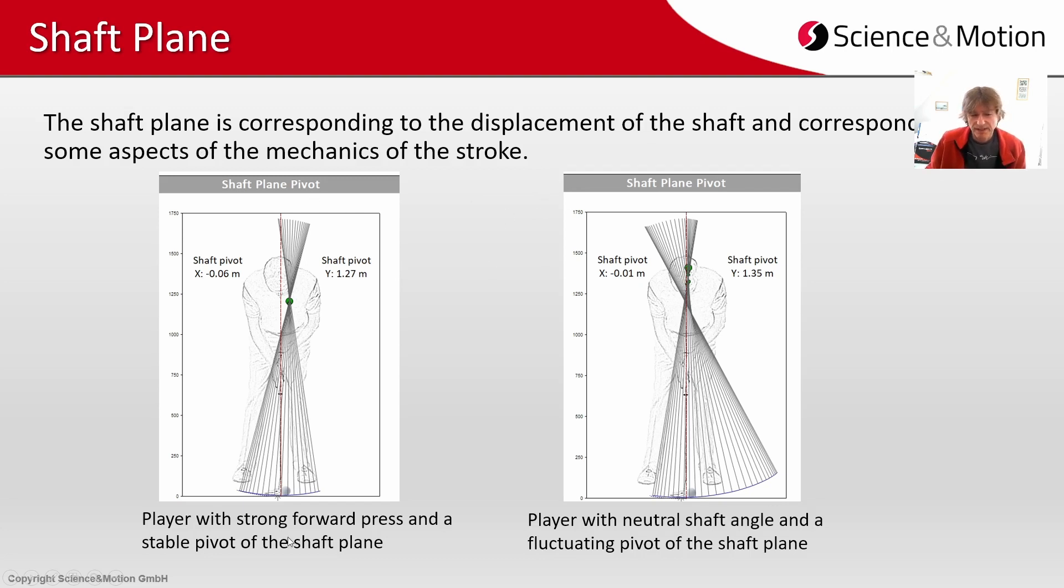On the left side you see a player with a very strong forward press as the center of shaft rotation is on the left side of the player. But you see a very stable pivot throughout the stroke showing that the putter is moved in a very stable mechanical way. On the right side you see that the shaft pivot is neutral in the center of the player, so no forward press or back lean. But you see a very much fluctuating pivot indicating that there is some instability in moving the putter.